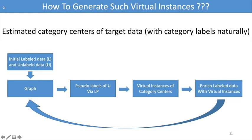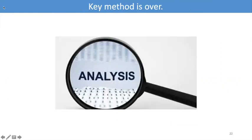We iteratively generate virtual instances with the prediction of label propagation and enrich labeled data with those virtual instances until converged. The key method of enriching labeled data with virtual instances is finished, which is quite simple and clear.